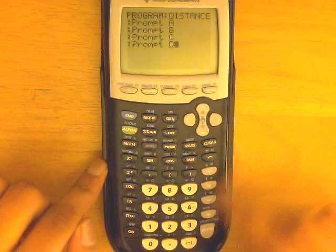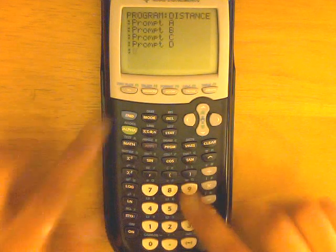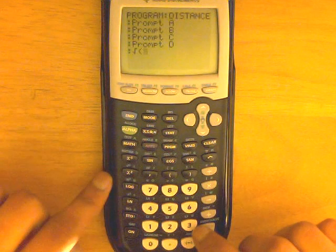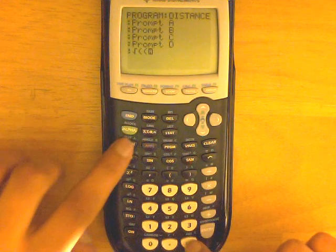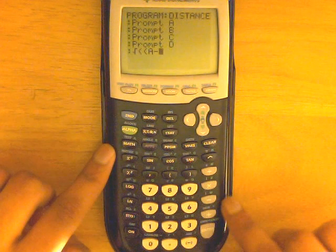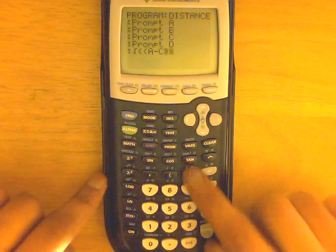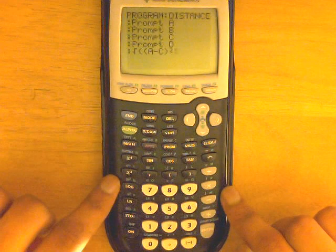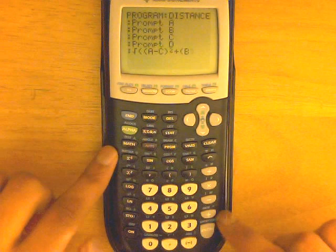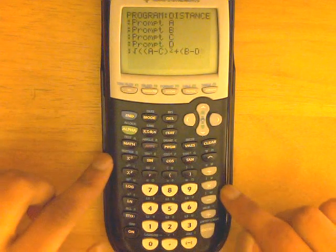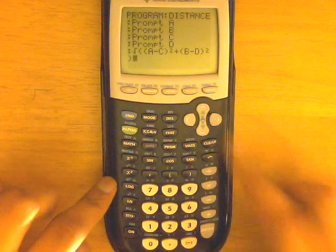And after you've got those four, hit enter one more time, and then we're going to actually enter the distance formula. So square root, and then parenthesis, another one, don't forget that parenthesis. Then alpha-A minus, don't get confused with the minus and negative sign, minus alpha-C, and parenthesis, squared, plus, parenthesis, alpha-B minus alpha-D, and parenthesis, squared, and then one more parenthesis, don't forget that last one.